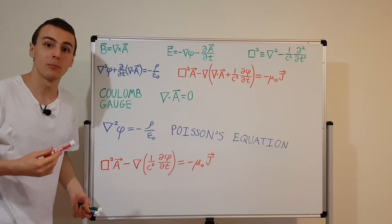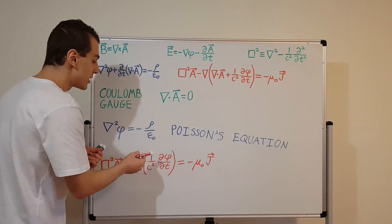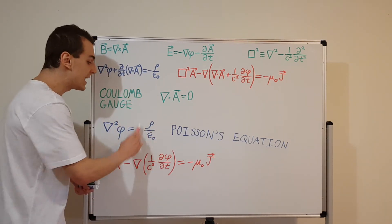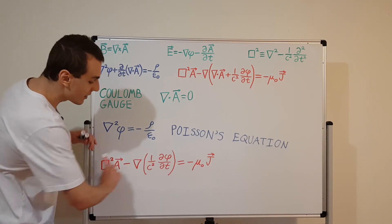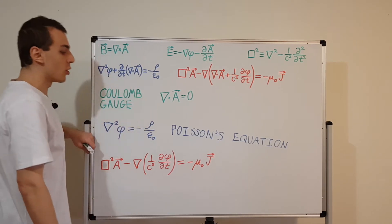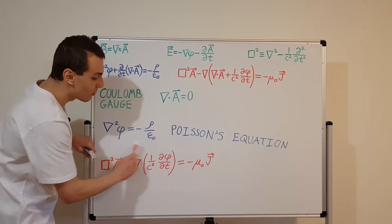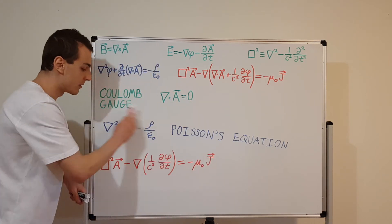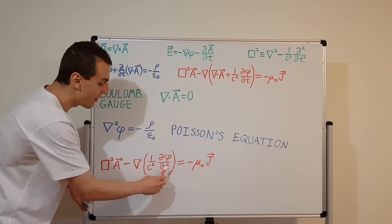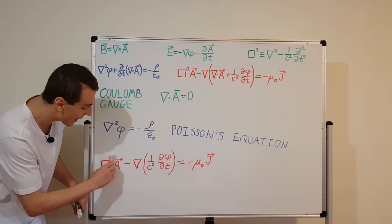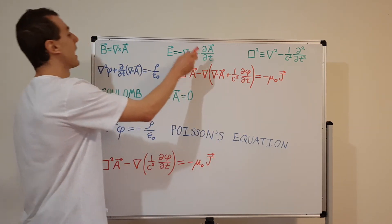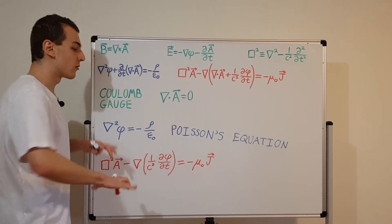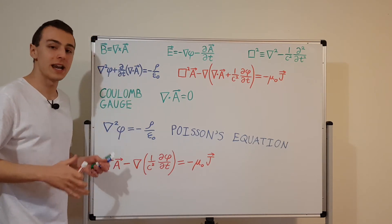If you're only interested in finding the potential, as in electrostatics, the Coulomb gauge is very convenient because you only need to solve Poisson's equation — a relatively easy partial differential equation. If there is no charge it's homogeneous; in general with charge density it's inhomogeneous. You can solve for phi given rho, substitute that phi into the red equation along with the known current density j, and thereby find A. Once you have A and phi, you can find the electric and magnetic fields.